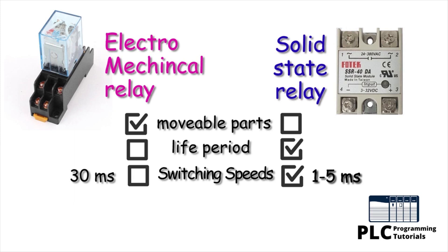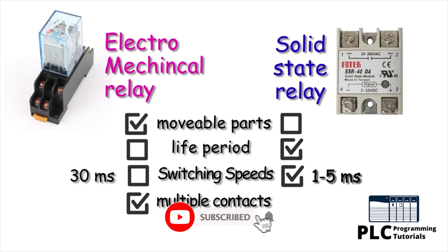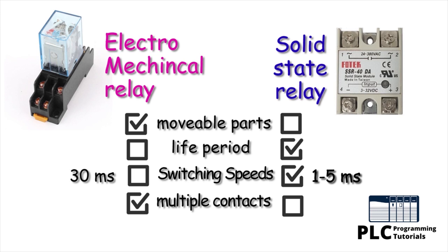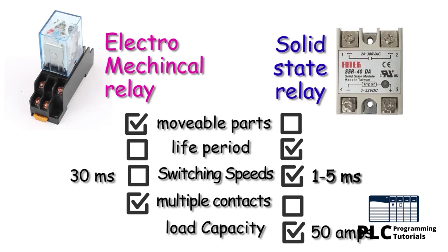The electromagnetic relay normally comes with multiple numbers of potential-free contacts. This makes the electromagnetic relay more flexible and adaptable in machine operation, meaning we have plenty of spare contacts to turn on or off multiple field devices operating at different voltage levels with a single relay. Regarding current-carrying or load capacity, nowadays SSR is more preferable — it can go up to 50 amperes, while an electromagnetic relay with movable contacts can only go up to 10 amperes.